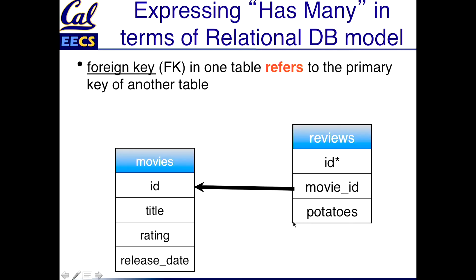So how do you represent this in terms of the relational model? We basically created a foreign key, which is a field in one table that refers to the primary key of something in another table. In our example, in our hypothetical table of reviews, it has its own primary key that identifies the particular review. But we also added a new field called movie ID, and the idea is that this is going to refer to the movie whose primary key matches — that's the movie this review is about. And then the number of potatoes, right — that's the thing we actually care about in the review.